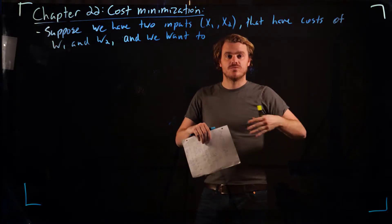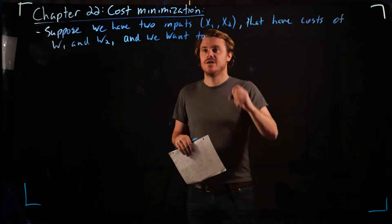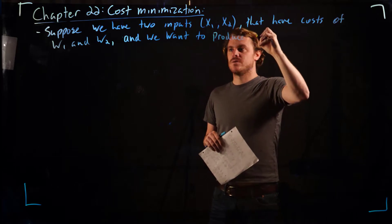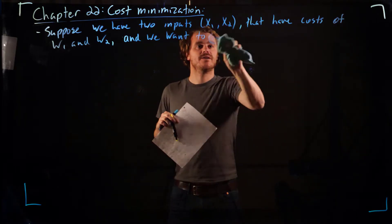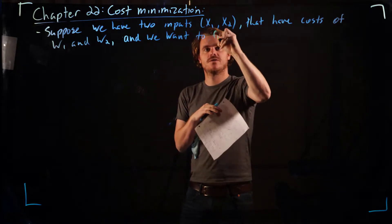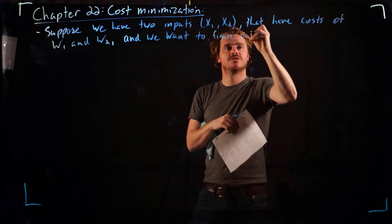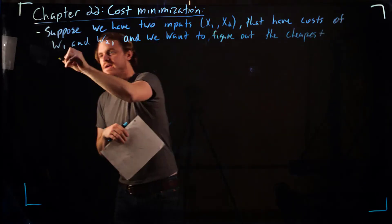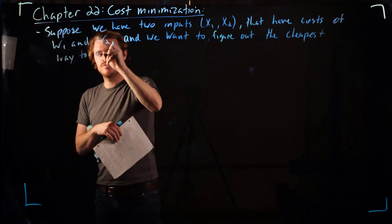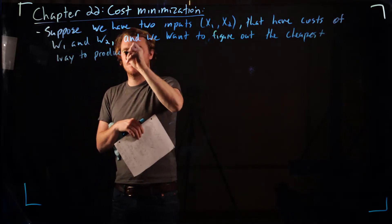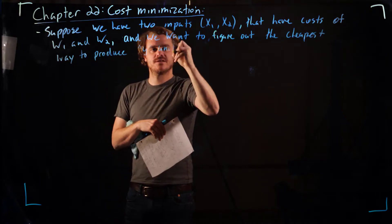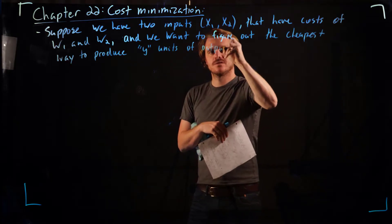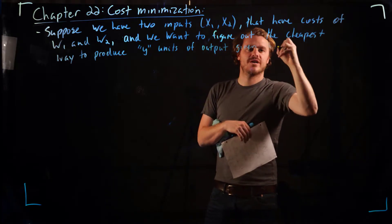Given some production function, what does that problem look like? We want to figure out the cheapest way to produce y units of output given a production function.